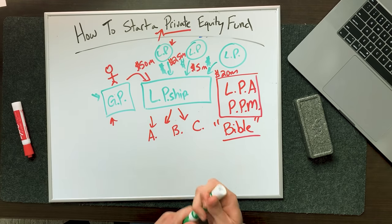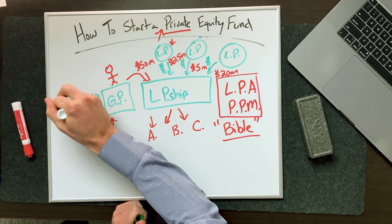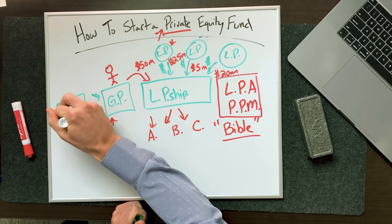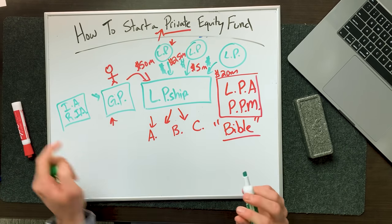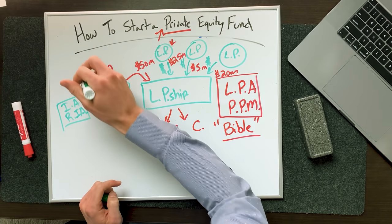There's another entity you'll set up called your investment advisor or registered investment advisor. Investment advisor is if you're under $100–$150 million; registered investment advisor is if you're over $150 million. This is another entity — it's usually the same owners, so you'll own part of that and part of the general partner. Both are managing entities of the limited partnership. This is where you file with the SEC. You give investment advice to the limited partnership and they pay you a management fee for doing so.